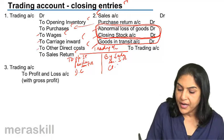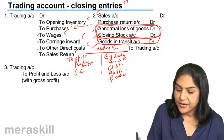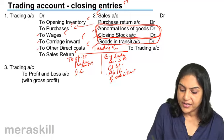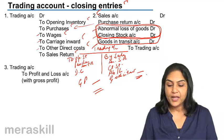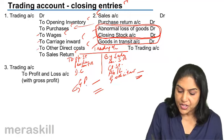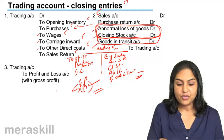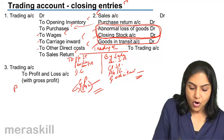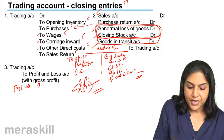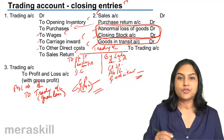The credit side also includes closing stock, abnormal loss if any, and goods in transit. The net result is gross profit, as we had seen before. This gross profit is transferred to the profit and loss account — trading account is debited to profit and loss account with the amount of gross profit. Or, if there is a gross loss, the profit and loss account is debited to the trading account with the amount of gross loss.